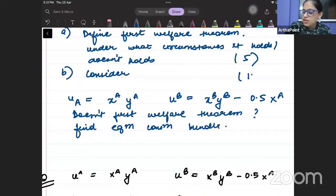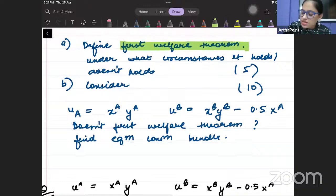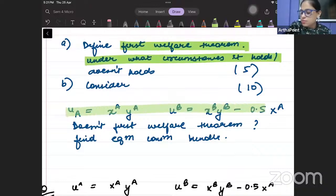And then they will ask you, find equilibrium consumption bundle. And they will make this a 10 marks question. So usually this will happen in exam. They will give you a theoretical question, but on the basis of that, they will also ask you some practical question.